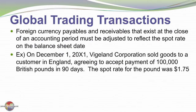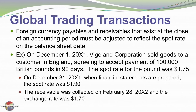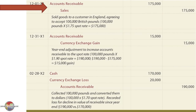For example, on December 1, 20X1, Vigeland Corporation sold goods to a customer in England, agreeing to accept payment of 100,000 British pounds in 90 days. The spot rate for the pound on that date was $1.75. We record the sale: debit accounts receivable and credit sales $175,000 — that's 100,000 British pounds at $1.75 per pound.